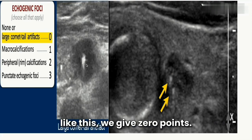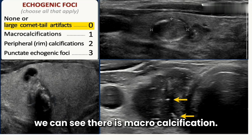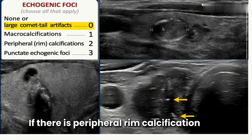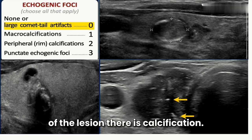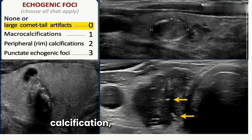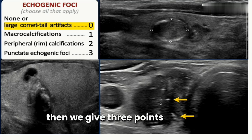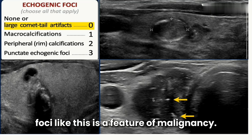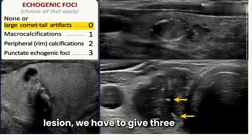The final component is echogenic foci. If there is a large comet-tail artifact, we give zero points. If there is macrocalcification, we give one point. If there is peripheral or rim calcification — calcification around the periphery of the lesion — we give two points. If there are punctate echogenic foci, we give three points, as punctate echogenic foci are a feature of malignancy.